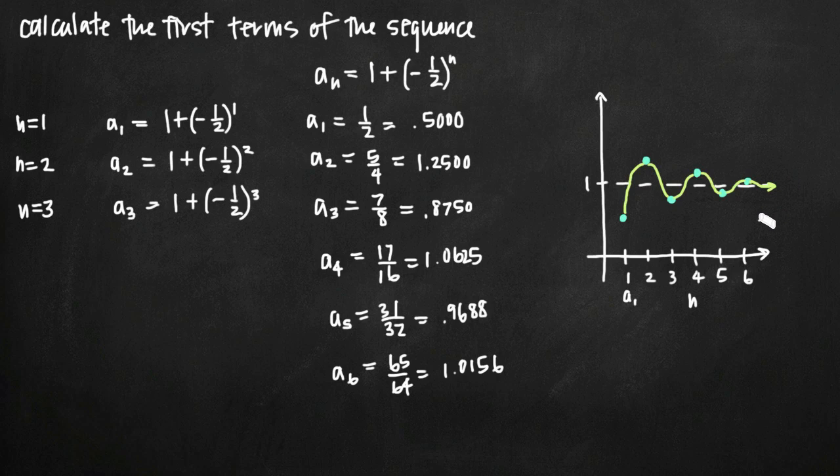So the conclusion that we can then try to draw is that the limit as n goes to infinity of the sequence a_n, this entire sequence here, is equal to 1. Because as n goes farther and farther out to the right, these points will approach the line y equals 1. They'll get closer and closer and closer to it without ever reaching it. So the limit as n approaches infinity of the entire sequence is 1.